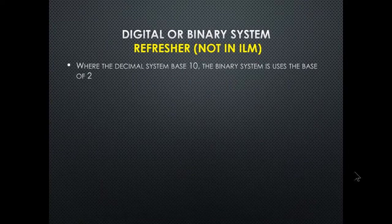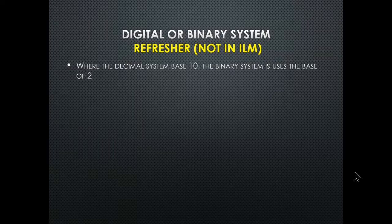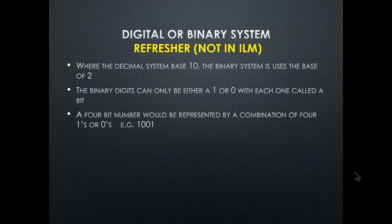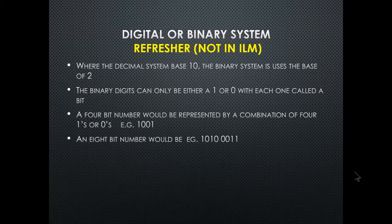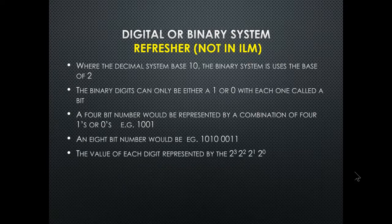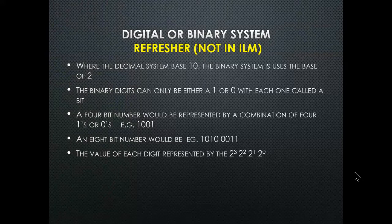This is a refresher on the digital binary system — it's not in the ILM. The decimal system uses base 10; the binary system uses base 2. Binary digits can be a one or a zero — one is true or on, zero is false or off. Each is called a bit. A four-bit number is represented by a combination of four ones or zeros. The value of each bit is represented by powers of two: 2⁰, 2¹, 2², 2³, and so on.